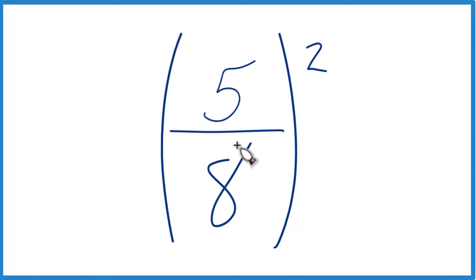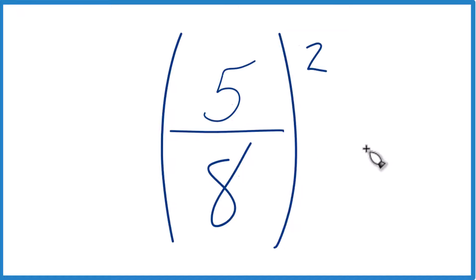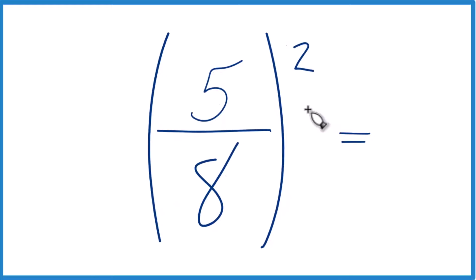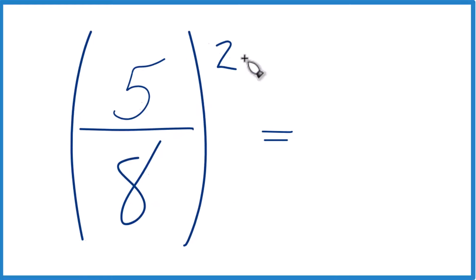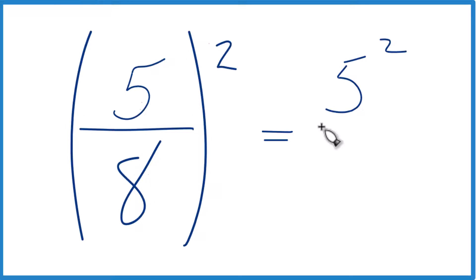Let's take a look at what 5 eighths to the second power — 5 over 8 to the second power — equals. Here's the way I like to think about it: I take the 5 to the second power, so 5 squared, then I divide that by 8 to the second power, or 8 squared.